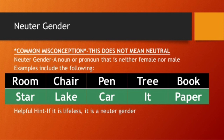Now let us move on to neuter gender. Note: it is 'neuter,' not 'neutral.' Neuter gender is a noun or pronoun that is neither female nor male — simply put, it refers to non-living things. We cannot differentiate them into male or female. Examples: room, chair, pen, tree, book, star, lake, car, paper — these are lifeless things.